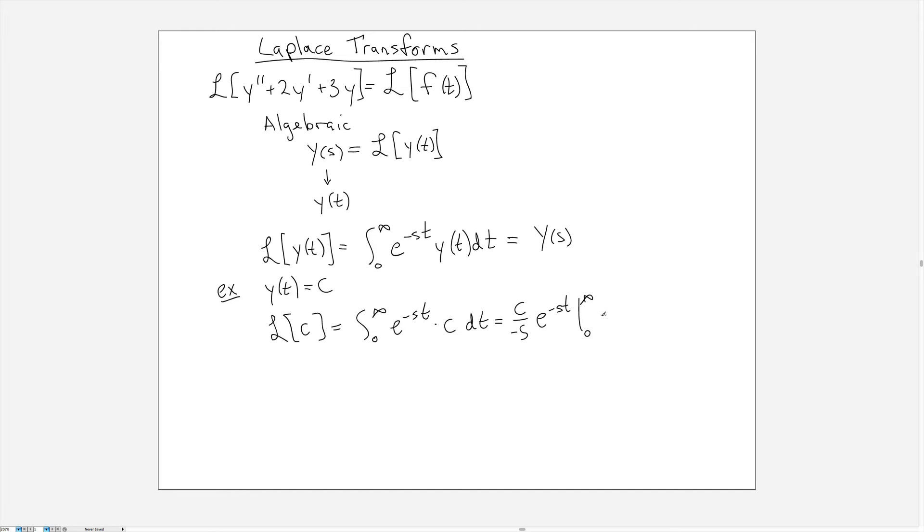Now this infinity up here really means that we're taking the limit as A goes to infinity of C over minus S e to the minus S T evaluated from 0 to A. Well there's a question now because A is going off to infinity. In order to be able to evaluate this, we have to make an assumption about S. So as long as S is positive, we can proceed.